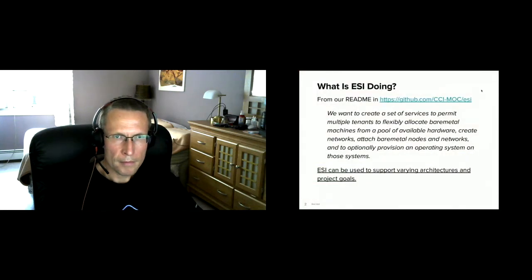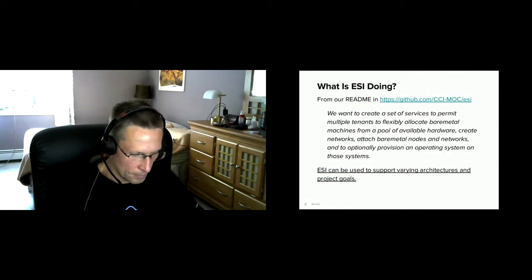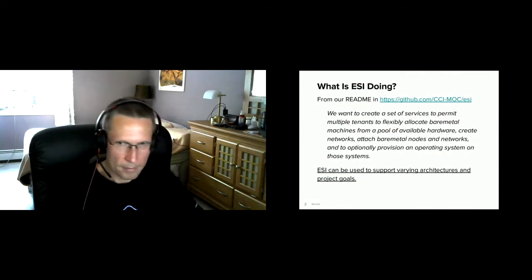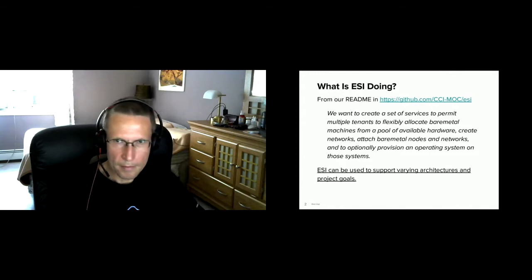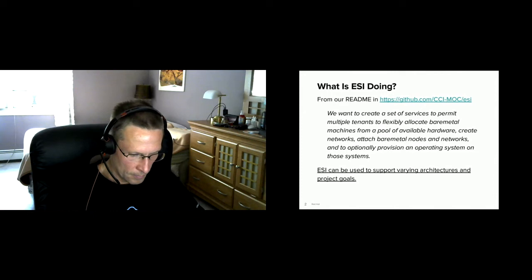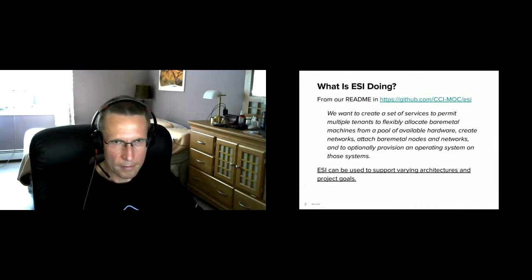So what is ESI doing? From our README, we want to create a set of services to permit multiple tenants to flexibly allocate bare metal machines from a pool of available hardware, create networks, attach bare metal nodes and networks, and to optionally provision an operating system on those systems. One key thing to note is that ESI does not compel users to a specific service architecture. You can put the pieces together yourself to support your own architectures and project goals.